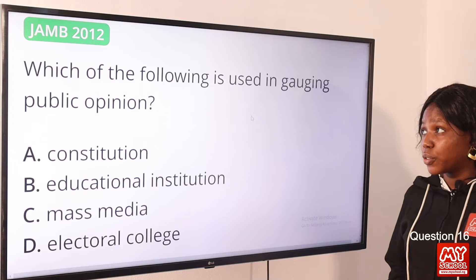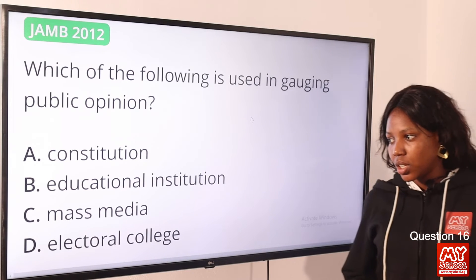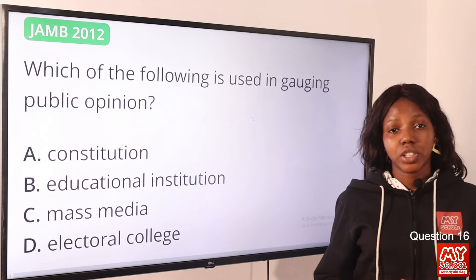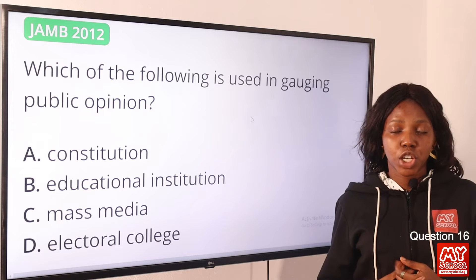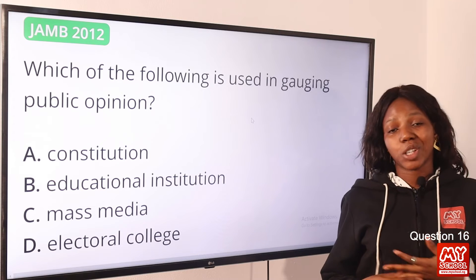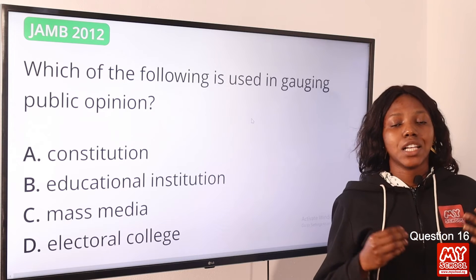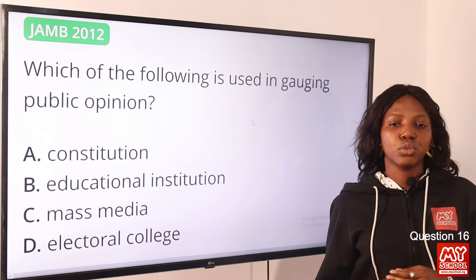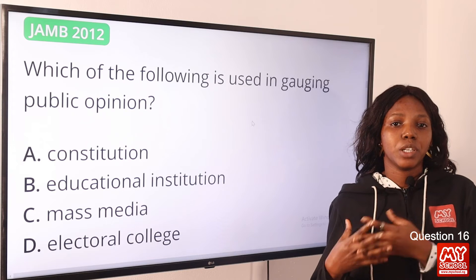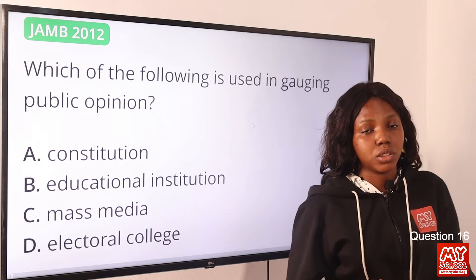Question 16: Which of the following is used in gauging public opinion? The answer is mass media. Mass media is any form of communication — whether written, spoken, or broadcast — that reaches a large audience. Mass media is an instrument used to measure public opinion. The answer remains option C, mass media.